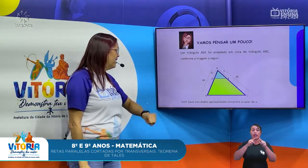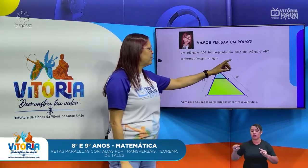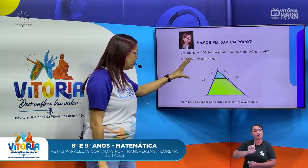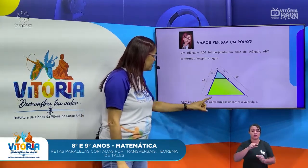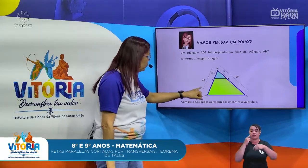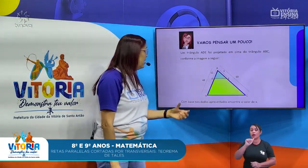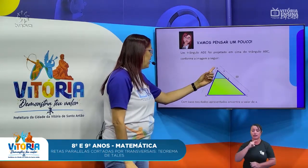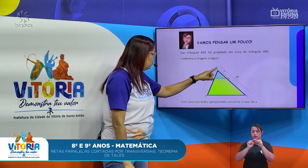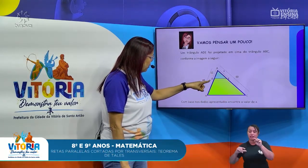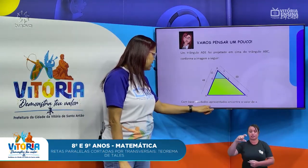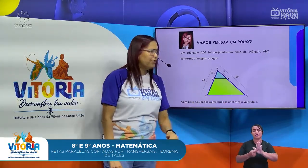Um triângulo ADE foi projetado em cima do triângulo ABC, conforme a imagem a seguir. Vejam que eu tenho aqui um triângulo ABC em que o lado AB mede 48, o lado AC mede 60, e eu tenho um triângulo ADE projetado em cima do triângulo ABC, em que o lado AD mede 12 e AE mede X. Com base nos dados apresentados, encontre o valor de X.